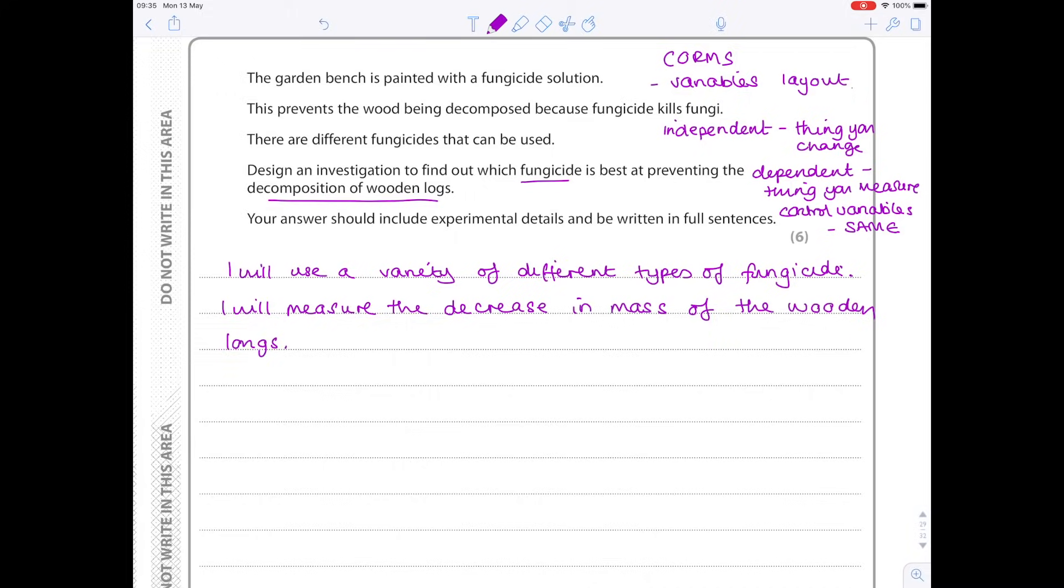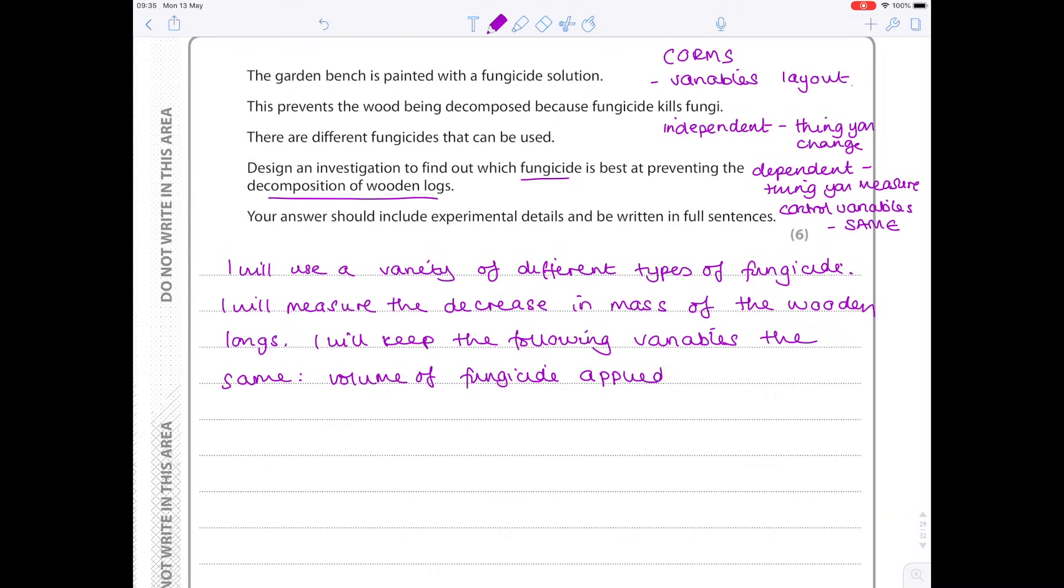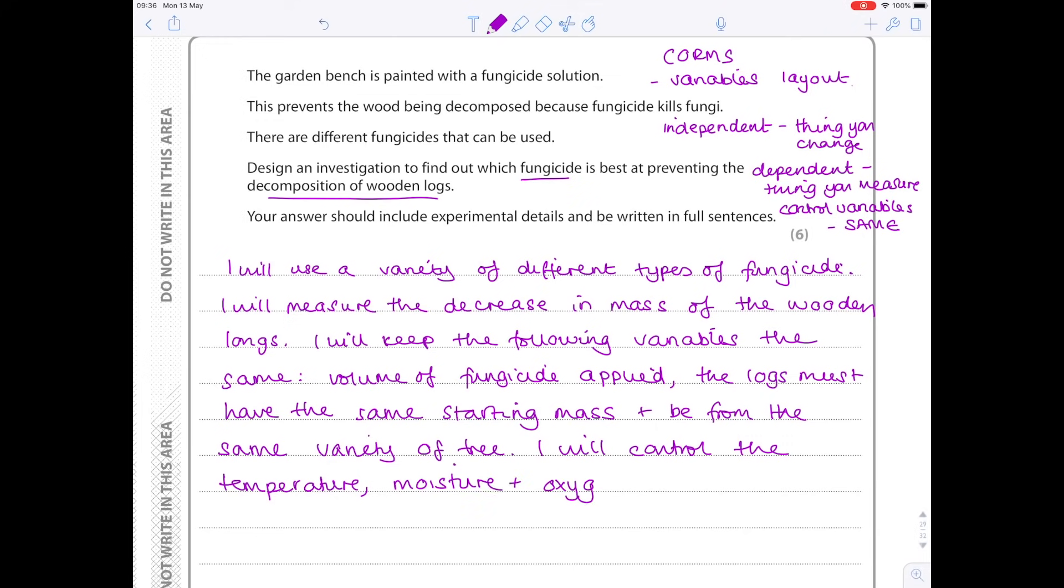Then the control variables. I will keep the following variables the same, and you want to list as many as possible here. So obviously I need to apply the same volume of fungicide. The log needs to have the same starting mass and obviously they must be the same species of tree, because some trees will decompose naturally faster than others. And then lastly I will control the temperature, moisture, and oxygen levels. So lots here, lots of control variables.